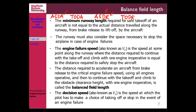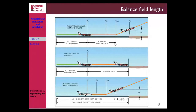If you look at runway specifications for Heathrow or London City, rather than ASDR or TODR they use ASDA — accelerate stop distance available — and TODA — takeoff distance available. These are the distances the airport can provide, while ASDR and TODR are defined by your aircraft's performance.